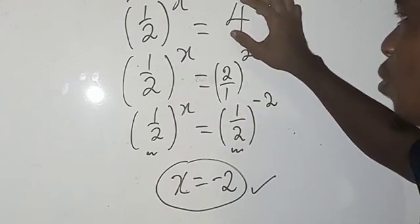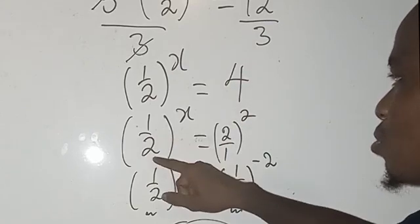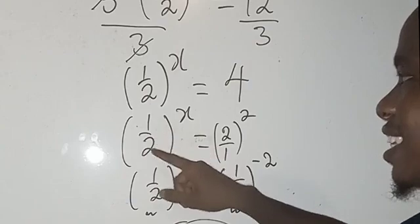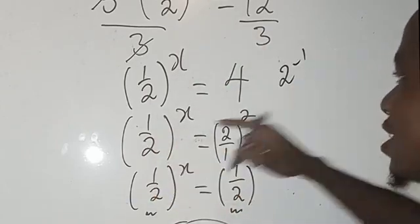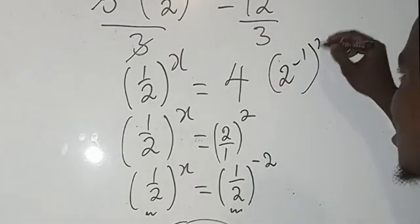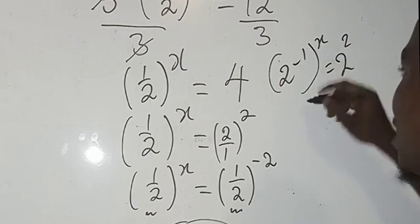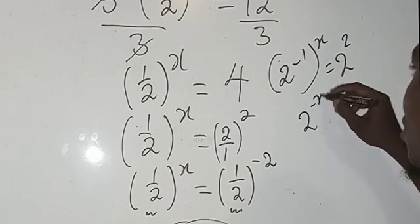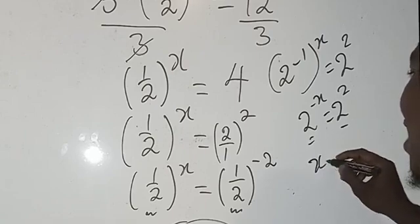And the same thing, you can go from here. We have 1/2—you can write this in index form as 2^(-1) raised to x, which equals 2^2. So this gives us 2^(-x) = 2^2. Same bases, so -x = 2, thus x = -2.